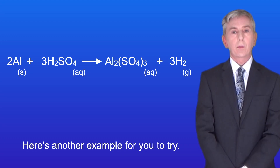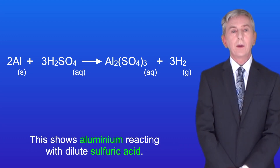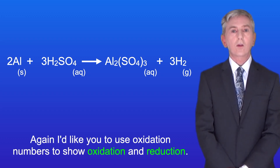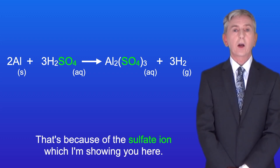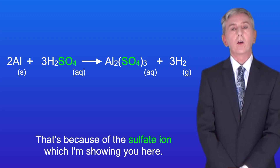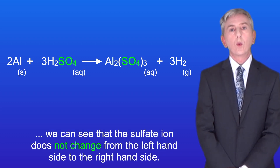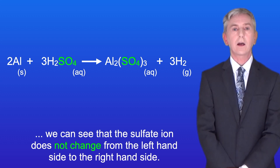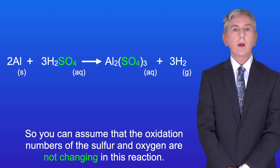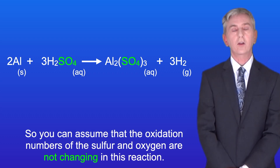Here's another example for you to try. This shows aluminium reacting with dilute sulfuric acid. Again I'd like you to use oxidation numbers to show oxidation and reduction. This can look a bit tricky because of the sulfate ion. However, looking at the equation we can see that the sulfate ion does not change from the left hand side to the right hand side, so you can assume that the oxidation numbers of the sulfur and oxygen are not changing in this reaction.